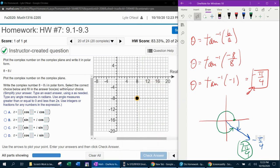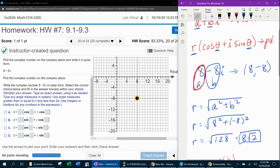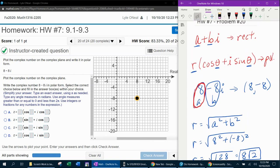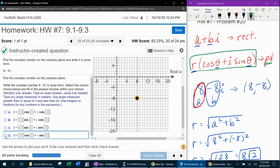So the only thing we need to do now is figure out which one of those answer choices is in the correct format. Remember I said polar is r cosine theta plus i sine theta. And the only answer choice that fits that format is answer choice D.